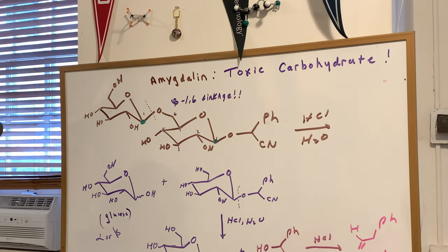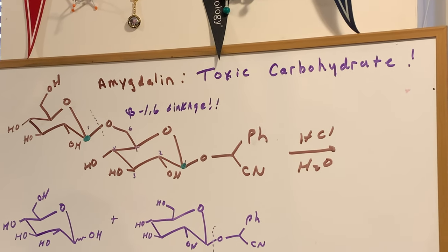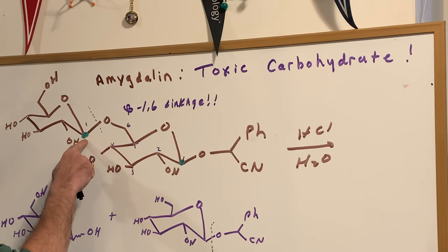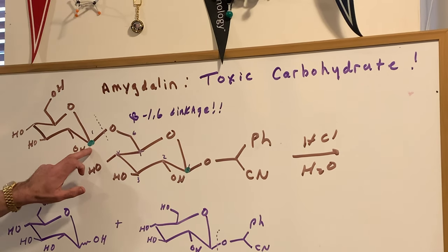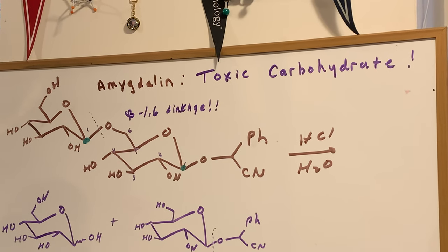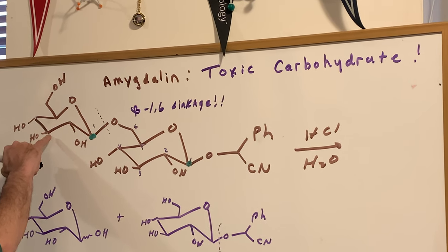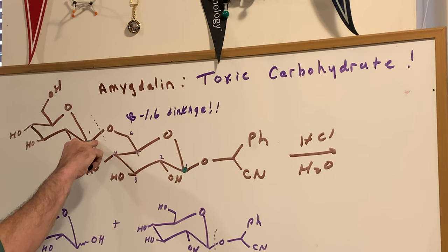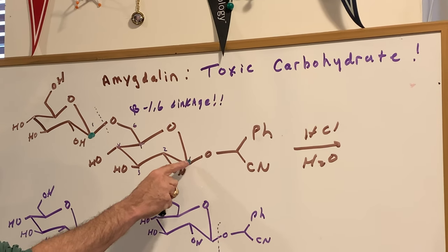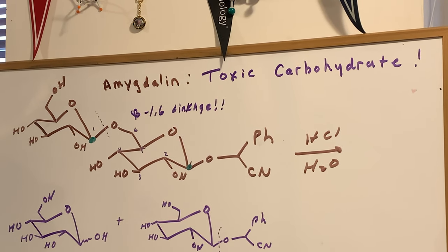But back to our problem on amygdalin — I want to show you what makes it so toxic. I put two dots at this linkage here, which hopefully everyone recognizes as the acetal linkage. There are two acetal linkages here. Whenever I decide if something is alpha or beta, I look at position one from the first sugar residue — it's going up, which means it's the beta linkage. If you number the carbons one through six, it's connected at the one and six. So we call this a beta 1-6 linkage.